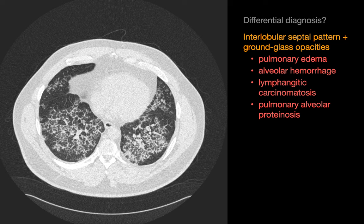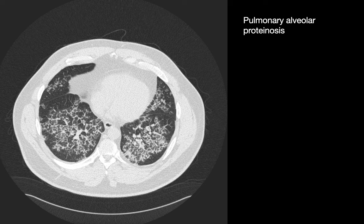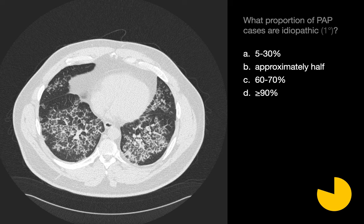This particular case is an example of pulmonary alveolar proteinosis, or PAP. With PAP, surfactant buildup causes increased flow in the pulmonary lymphatics and edema in the interlobular septi, which can sometimes cause cough, progressive dyspnea, and respiratory insufficiency. What proportion of alveolar proteinosis cases are idiopathic?